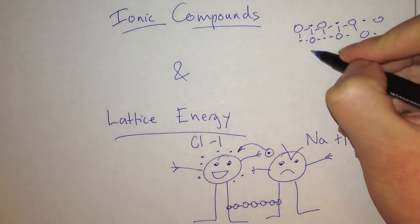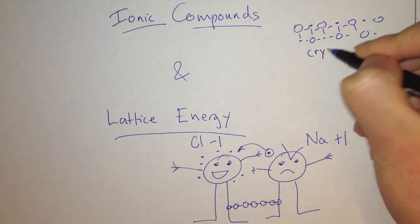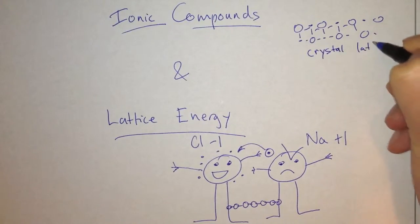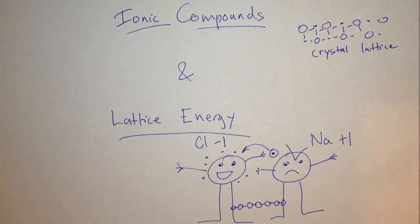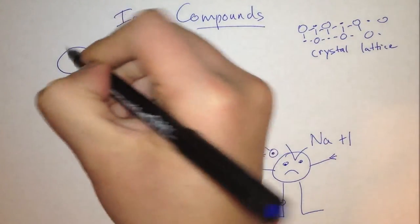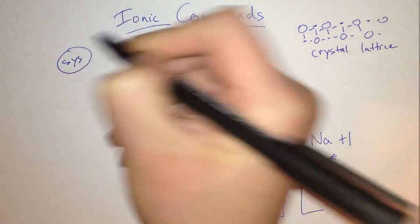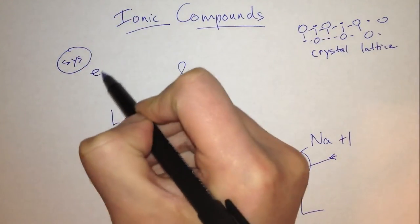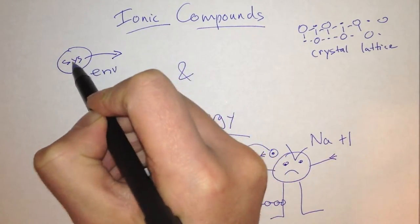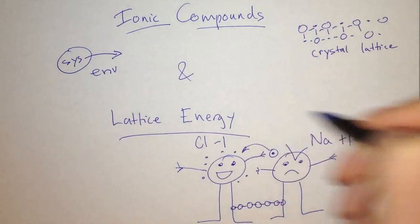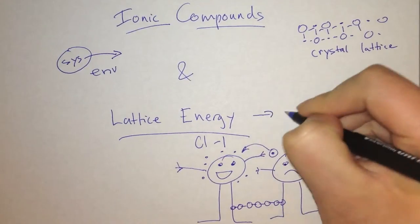This structure is called a crystal lattice. The lattice energy is the energy released when the crystal lattice is formed. All compounds form to lower their energy, and that energy is released into the environment. Based on our convention of defining energy from the point of view of the system, the energy leaving the system means our lattice energy is always negative.